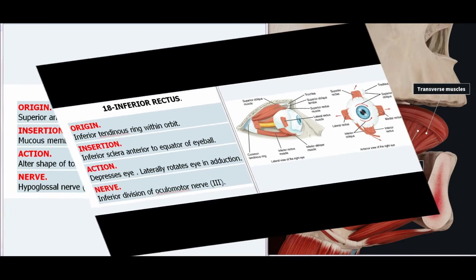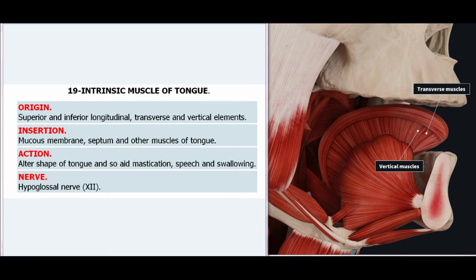19. Intrinsic Muscles of Tongue. Origin: Superior and inferior longitudinal, transverse, and vertical elements. Insertion: Mucous membrane, septum and other muscles of tongue. Action: Alter shape of tongue and so aid mastication, speech, and swallowing. Nerve: Hypoglossal nerve (XII).